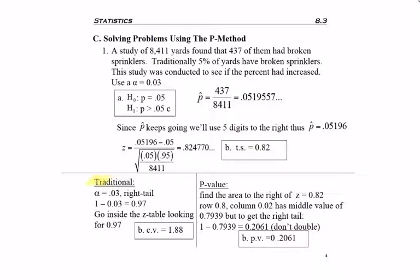Now, if I was using the traditional method, I would start with alpha. Alpha is given to me as 0.03, and I want to know whether I need to cut it in half or not. So I look to see what type of test I have. I have a right tail test. Right tail because up here it's like an arrow pointing to the right.